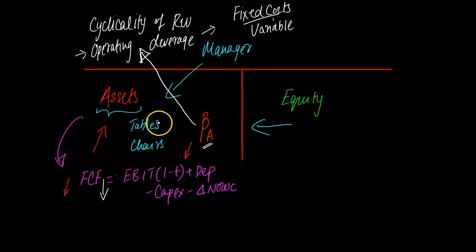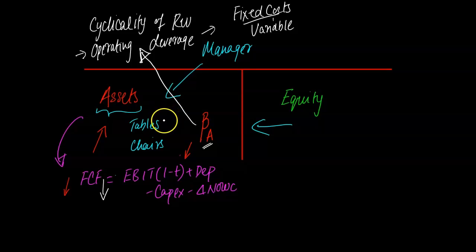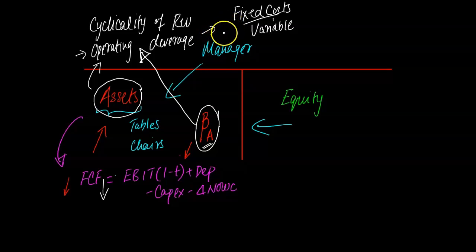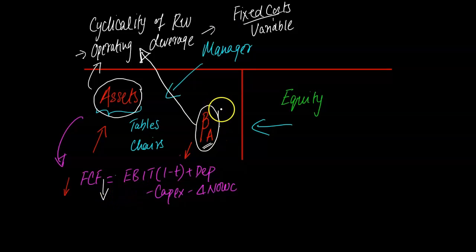Airlines, for example, tend to have high operating leverage because they have a lot of fixed costs — like lease payments on their planes — regardless of whether people are traveling. The point is that certain businesses, by their very nature, will have high cyclicality and high operating leverage. If someone could observe how movements in the market — changes in inflation, unemployment, and therefore the S&P 500 — are impacting these cash flows, the sensitivity of those cash flows to those changes would essentially be the asset beta.